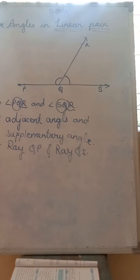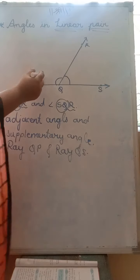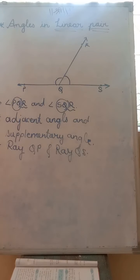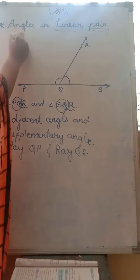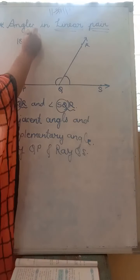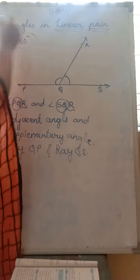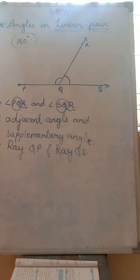So the sum — meaning addition — of the measures of the angles in a linear pair is always 180. Angles in linear pair and supplementary angles — are they the same? Yes, they are the same. So angles which have a common arm and whose other arm forms a straight line are said to be angles in linear pair.